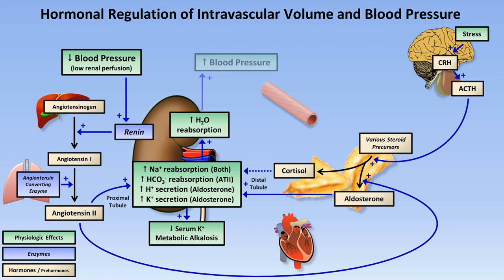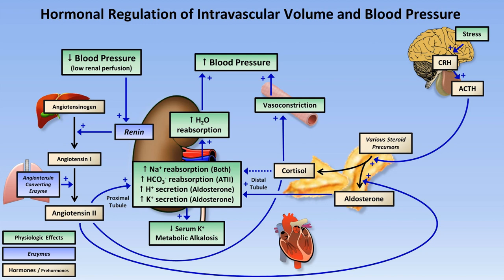Angiotensin 2 also directly stimulates vasoconstriction, which further increases blood pressure. Now, another aspect of volume and pressure regulation deals with ADH. ADH release is primarily stimulated by elevated serum osmolarity, which can be seen in some forms of dehydration, though low blood pressure is also a direct stimulus as well. ADH promotes water reabsorption as well as vasoconstriction.